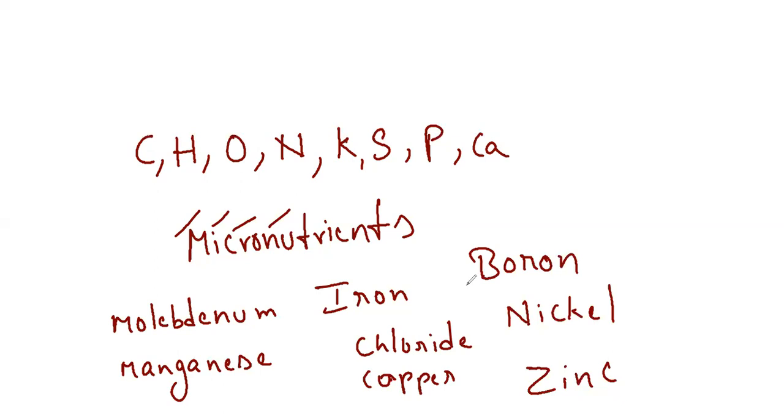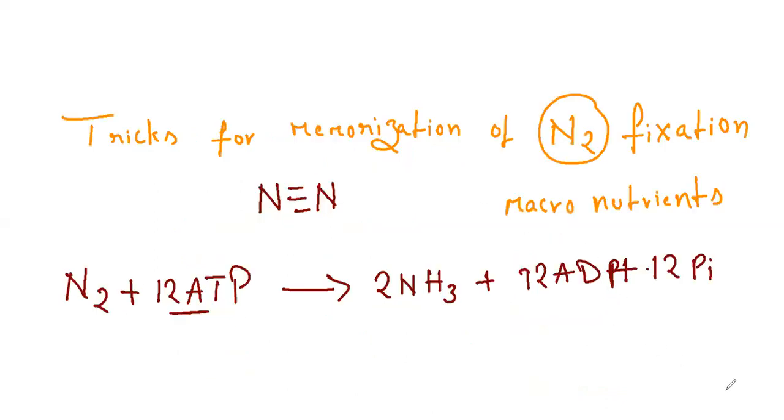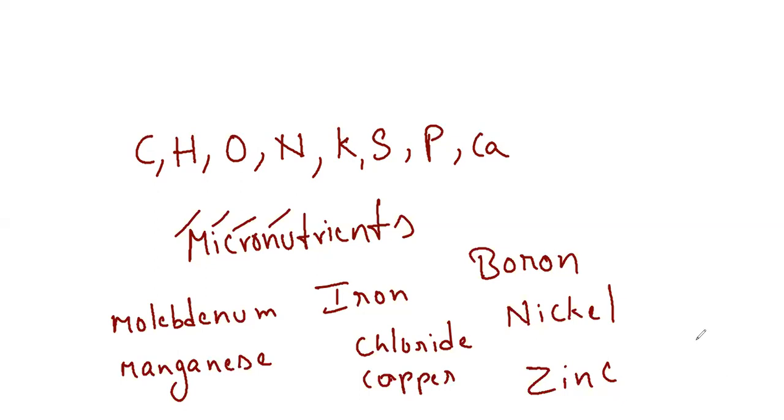These are the eight micronutrients: molybdenum, manganese, iron, chloride, copper, boron, nickel, zinc. So that's it. These are the mnemonics for remembering the micronutrients as well as macronutrients.